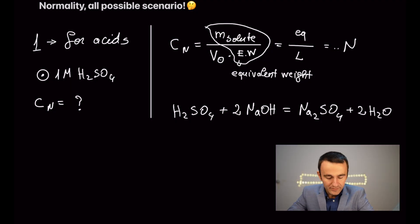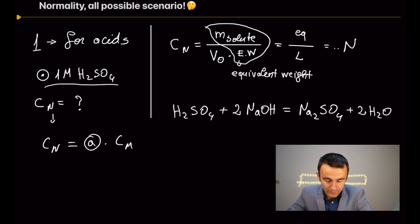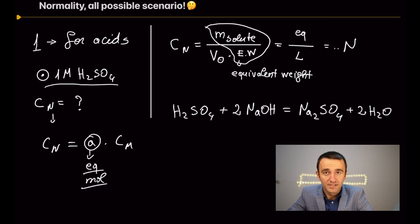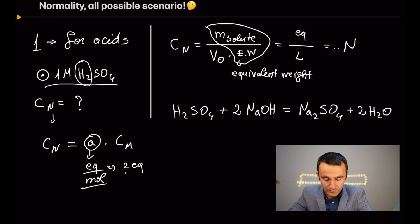We have sulfuric acid, one molar, and we need to find its normality. Normality is equal to A multiplied by C_M, where A is the number of equivalents per mole. In the case of acids, we look at the number of hydrogens they contain. For sulfuric acid, we have two hydrogens, so the number of equivalents per mole is two.